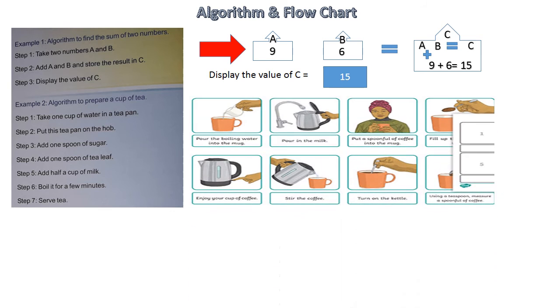Next one, example two. Algorithm to prepare a cup of tea. Step one, take one cup of water in a tea pan. Step two, put this tea pan on the hub. Step three, add one spoon of sugar. Step four, add one spoon of tea leaf. Step five, add half a cup of milk. Step six, boil it for a few minutes. Step seven, serve tea.